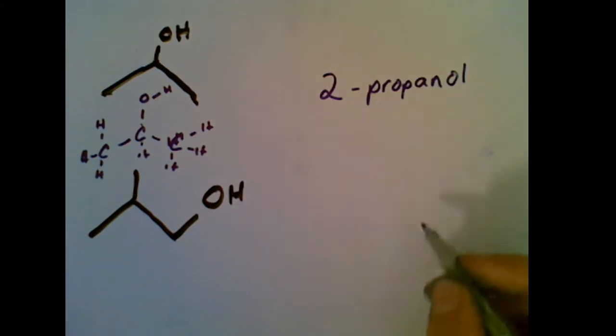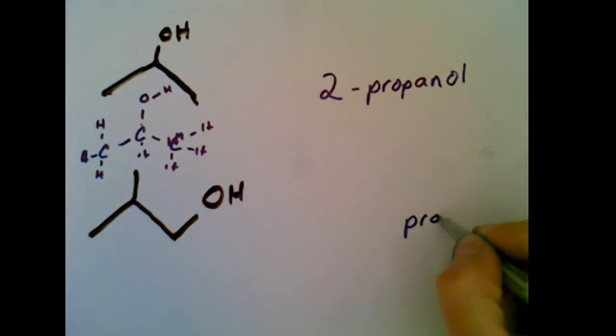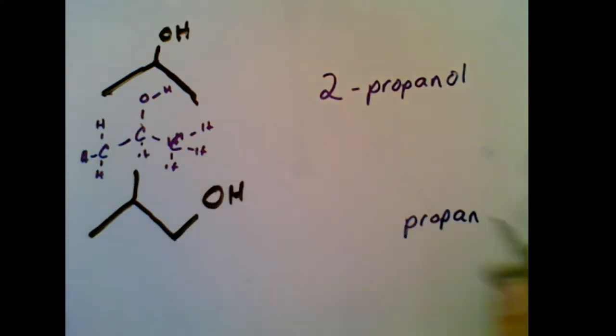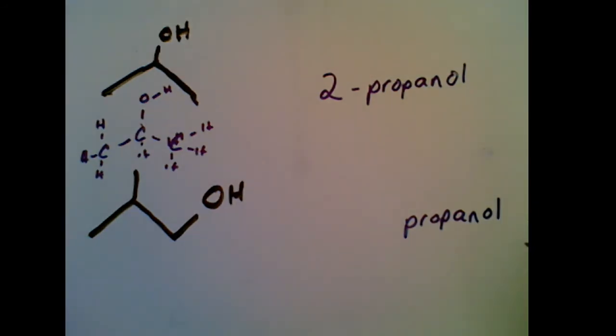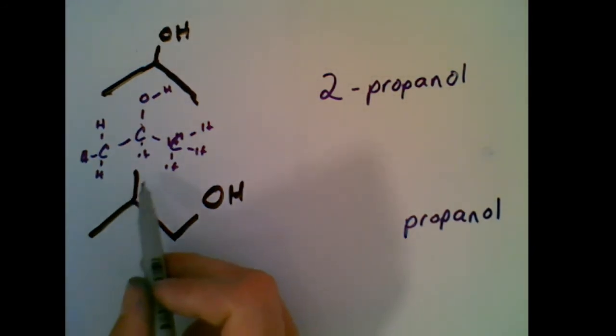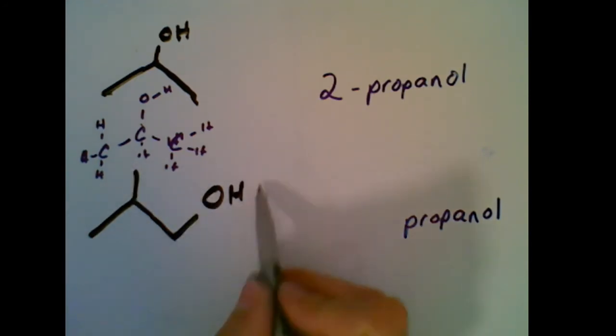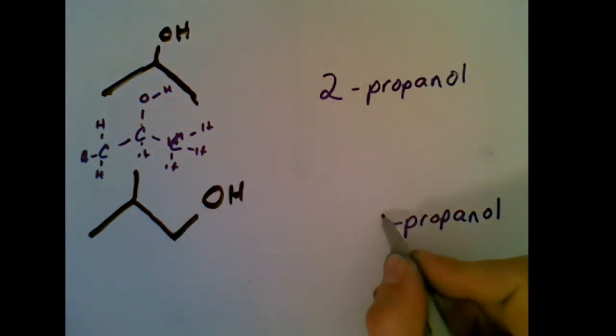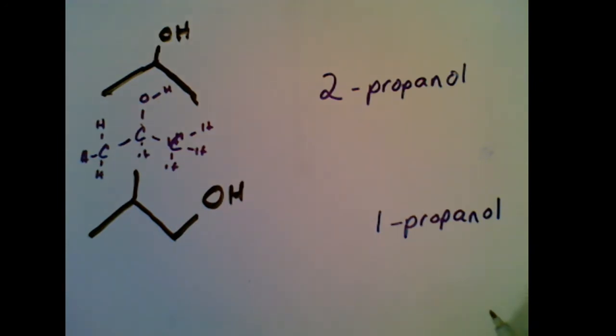So a three carbon chain, this is still a type of prop, single bonds, propane, single bonds with an OH, propanol. Now, there is a substituent, but we need to number this first. And this gets the lowest possible number we can give it. And so right in front of the name, we write one propanol.